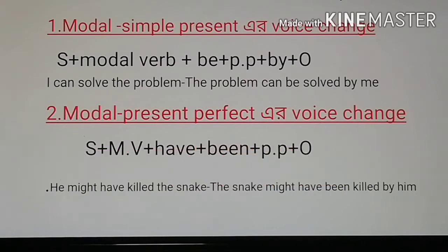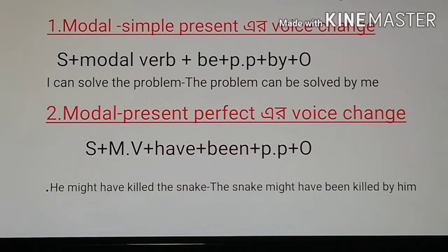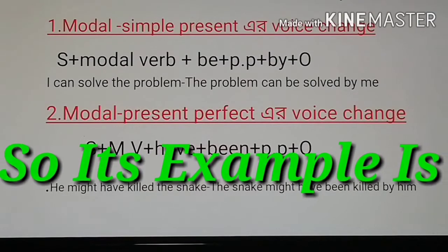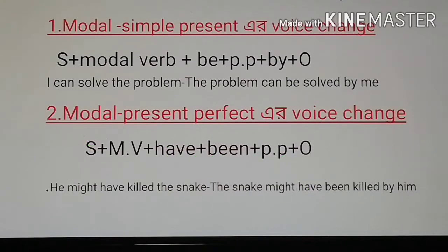Next one is modal present perfect voice change. The formula is: subject + modal verb + have + been + past participle (PP) + by + object. Its example is: 'He might have killed the snake.' The passive voice form is: 'The snake might have been killed by him.'